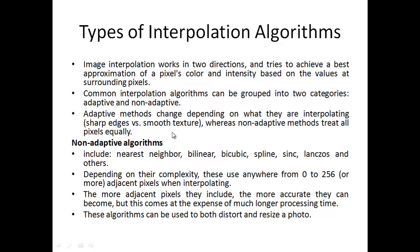There are two major categories of interpolation algorithms: non-adaptive and adaptive. Non-adaptive algorithms include nearest neighbor, bilinear, and bicubic. They work in two directions to approximate a pixel's color and intensity based on surrounding pixels. Depending on complexity, they use anywhere from 0 to 256 or more adjacent pixels. More adjacent pixels means greater accuracy but longer processing time.